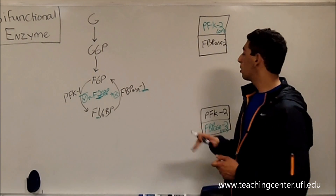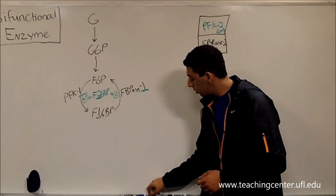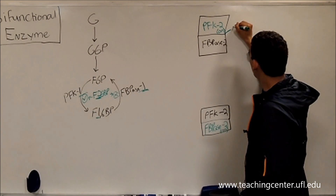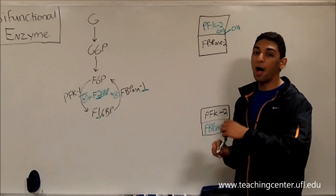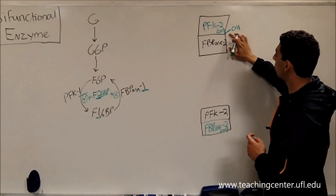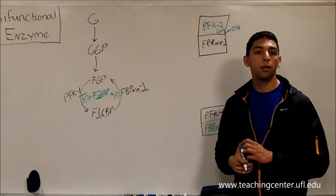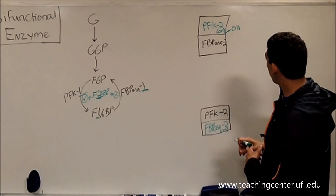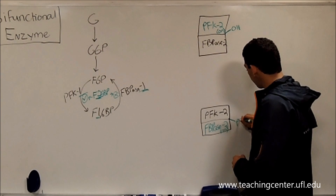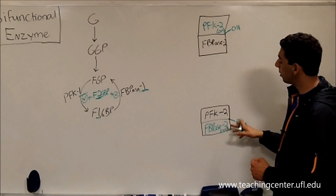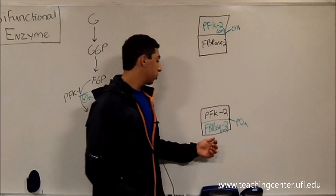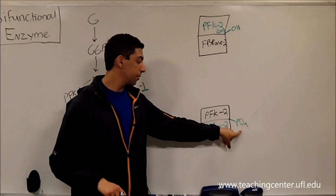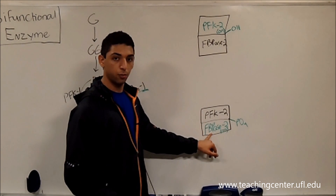So how does the molecule choose which half is on and off? It actually does it at one regulatory site. At this one regulatory site, if you have an alcohol group — an OH — on this regulatory site, then it's going to promote the enzyme to be in the form with PFK2 on and FBPase2 off. But if this alcohol group gets replaced with a phosphate — meaning the enzyme gets phosphorylated — then FBPase2 will be on and the other side will be off.